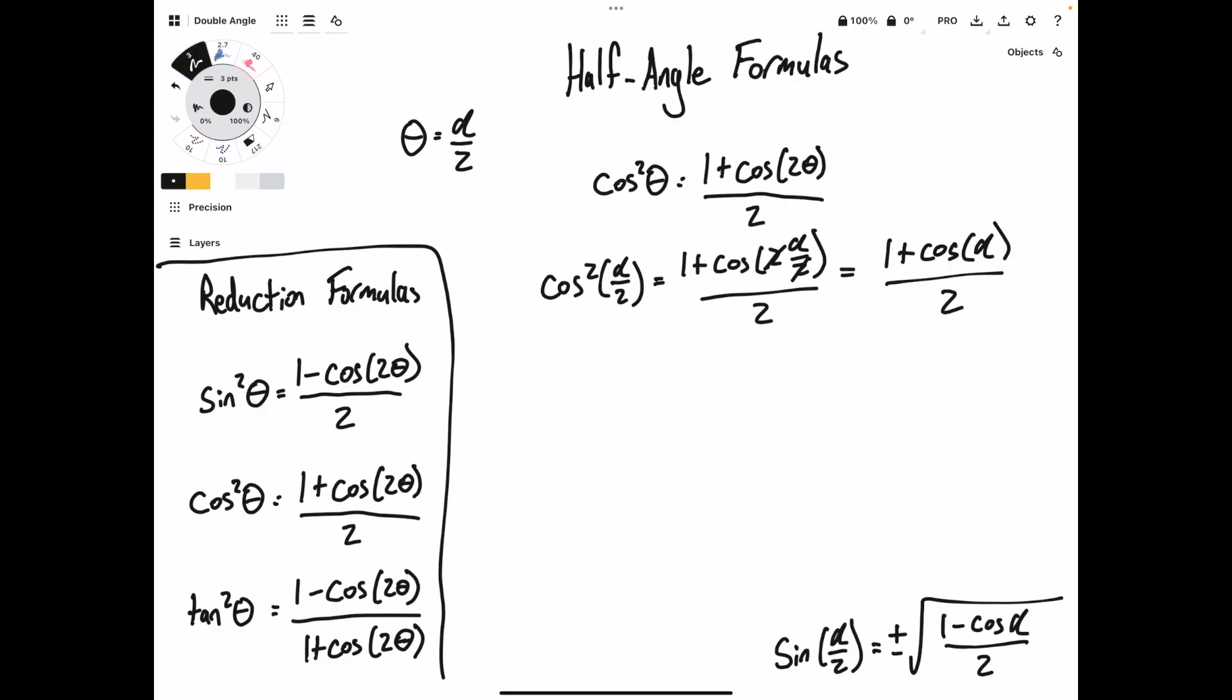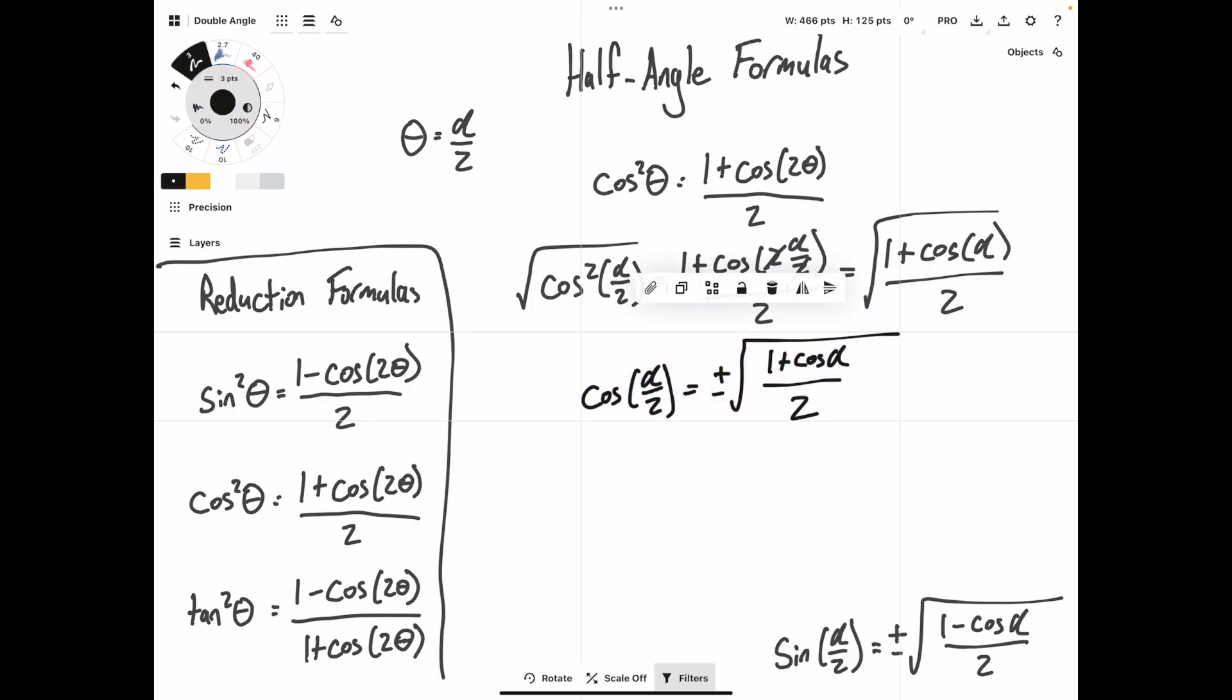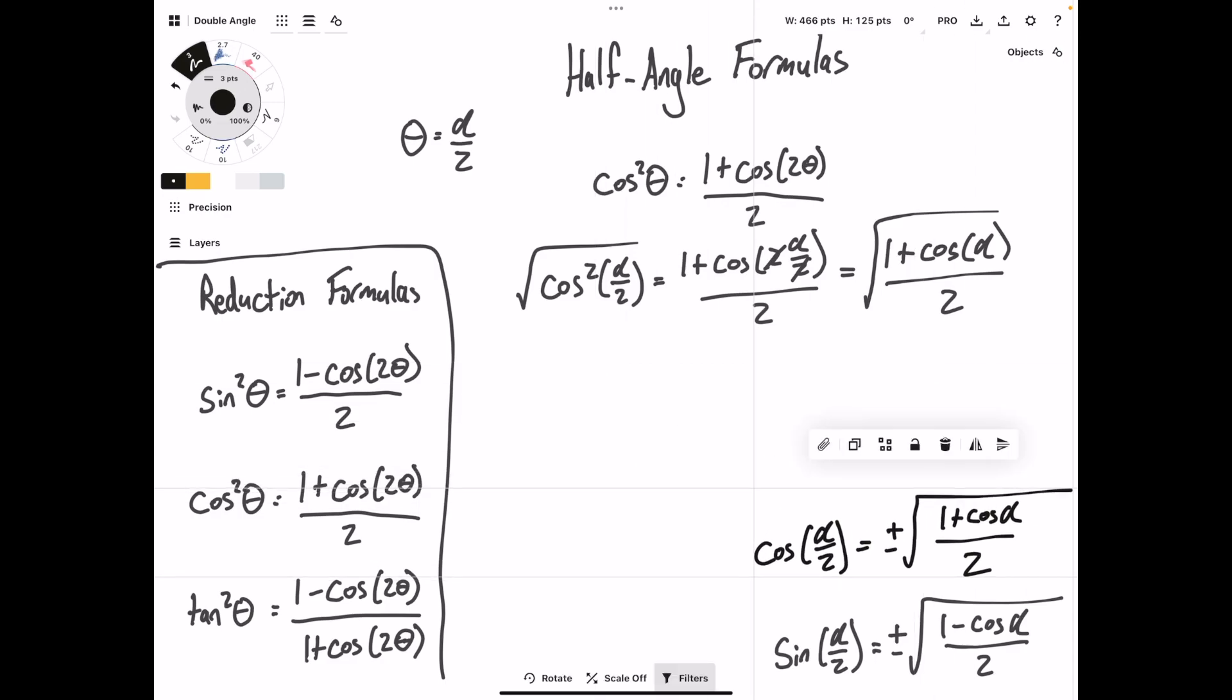And then taking the square root, we find that the cosine of alpha over 2 is equal to plus or minus 1 plus cosine of alpha over 2. So there is the half-angle formula for cosine, and we will do it one more time for tangent.